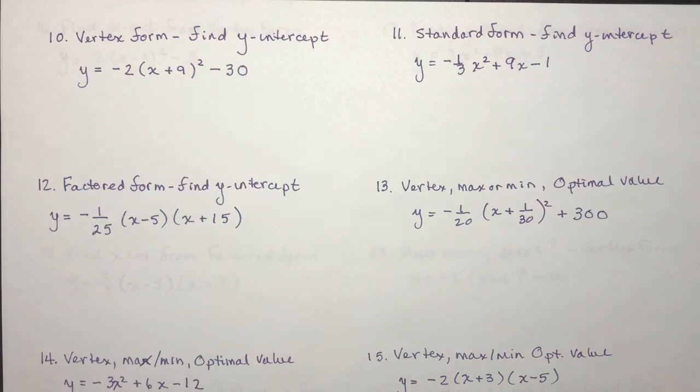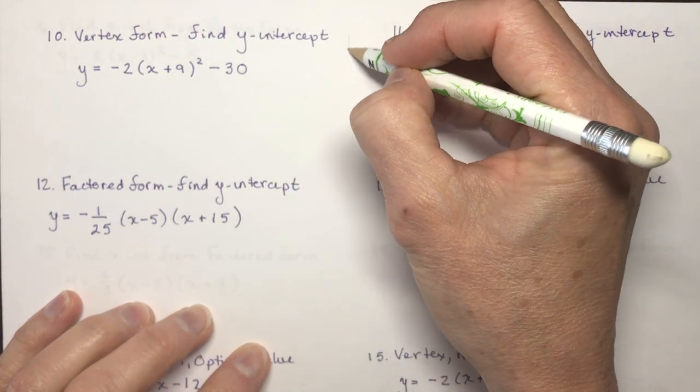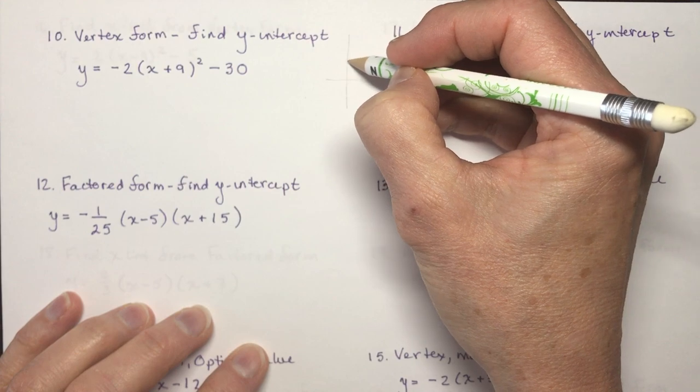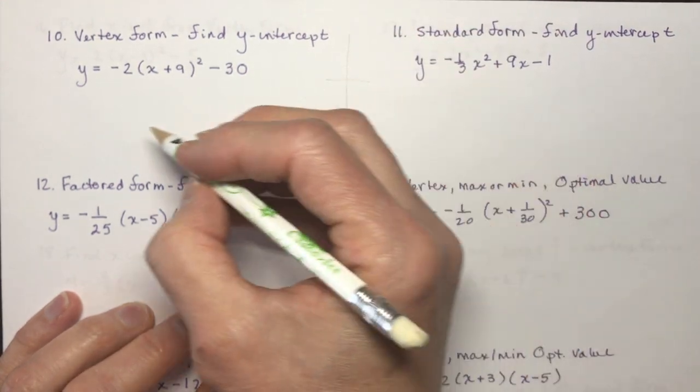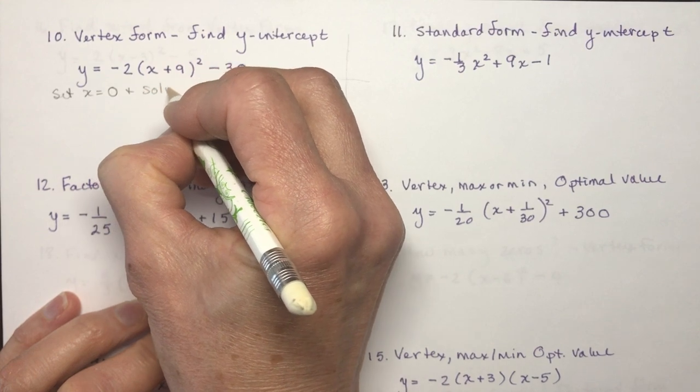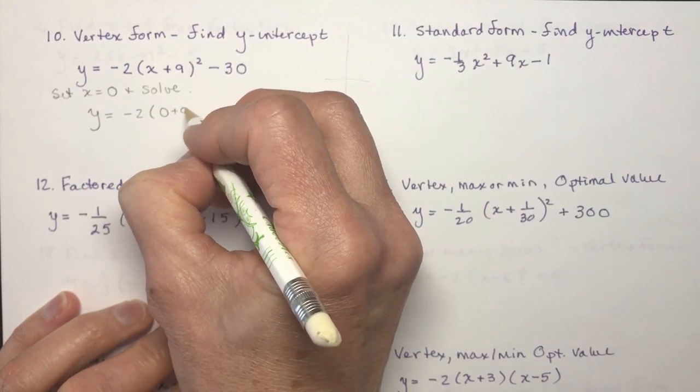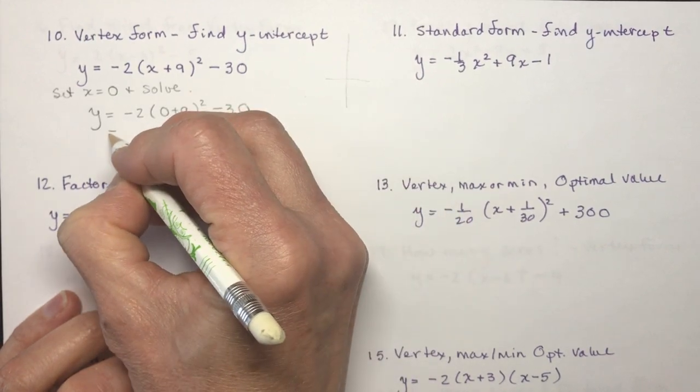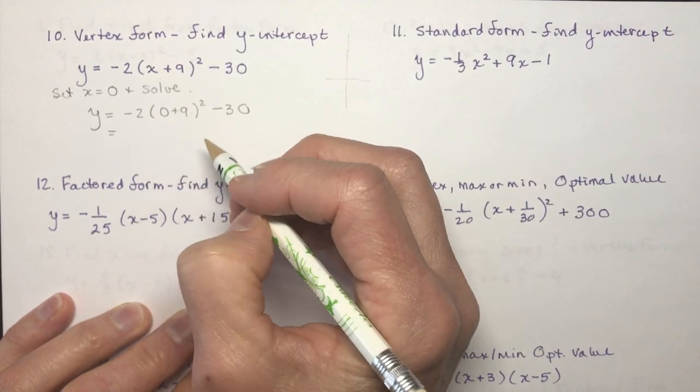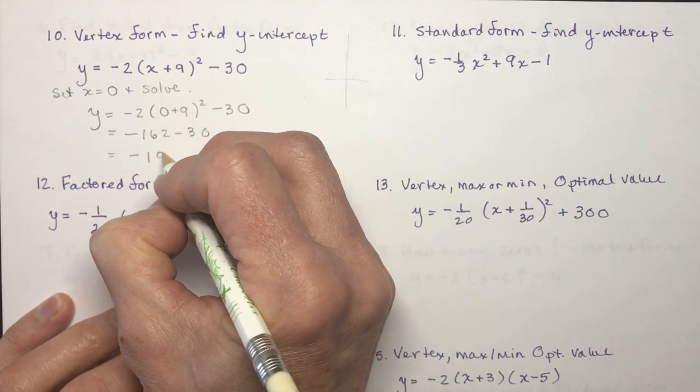So let's continue. Number 10, it says given the vertex form, find the y-intercept. You should understand that to find a y-intercept, remember when you're on the y-axis, all the x's are zero. So what we do is set x equal to zero and solve. When x is zero, I have minus 2 times zero plus 9 squared minus 30. That's going to give me 9 squared is 81, 81 times 2 is 162, it's going to be negative. So minus 162 minus 30 gives me minus 192.